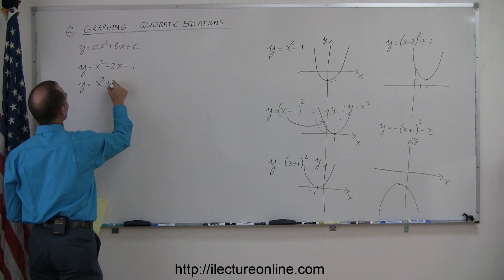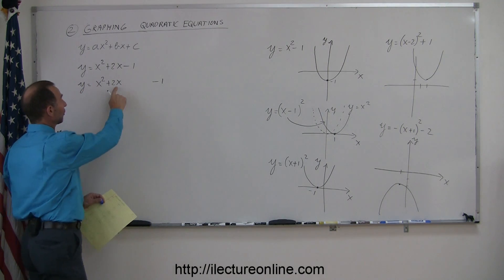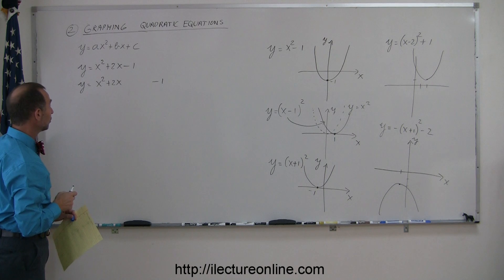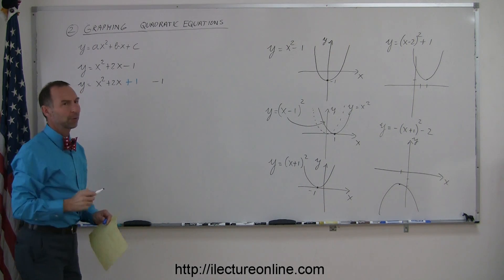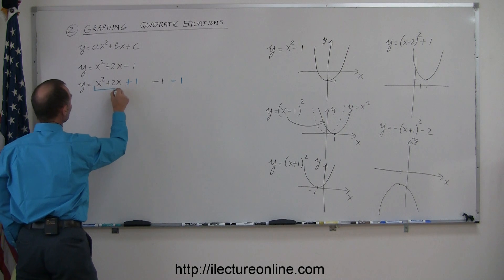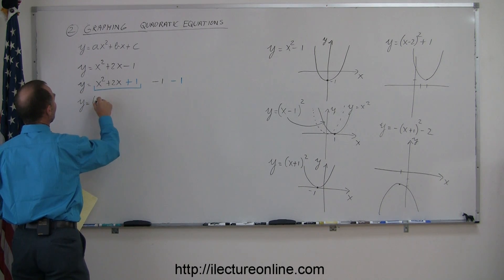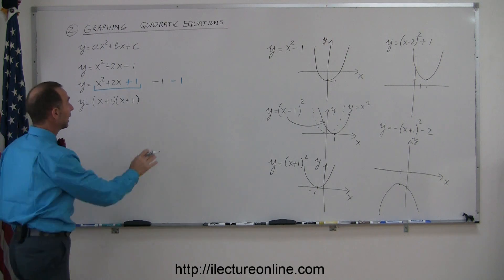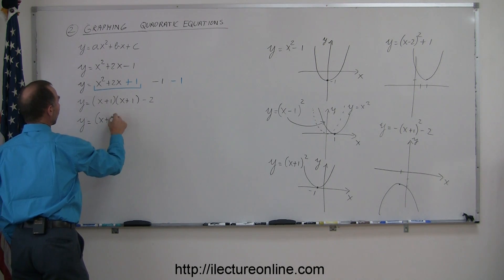You can do a quick transformation using completing the square. Write y equals x squared plus 2x, then move the minus 1 to the right. Take the middle term coefficient b — in this case b is 2 — divide by 2 to get 1, and square it to get 1. Add plus 1 and also subtract minus 1 so you haven't changed the equation. Factor the perfect square trinomial: y equals x plus 1 times x plus 1, minus 1 minus 1, giving y equals the quantity x plus 1 squared minus 2.